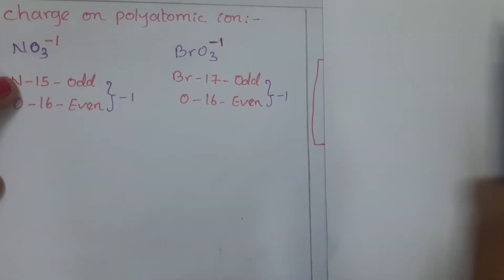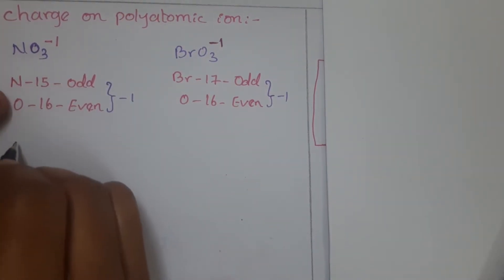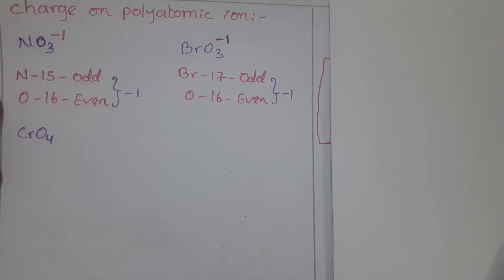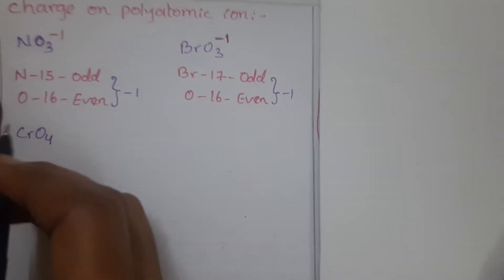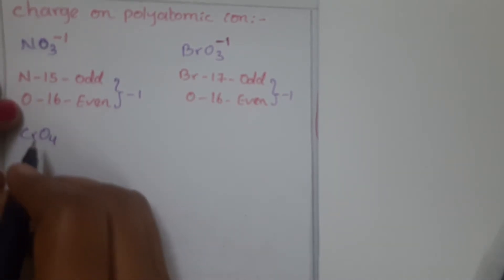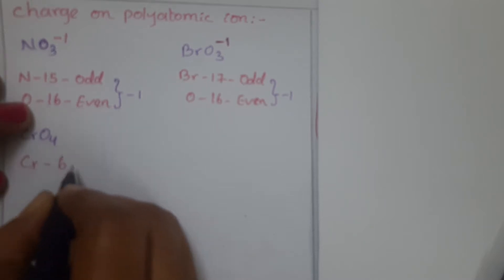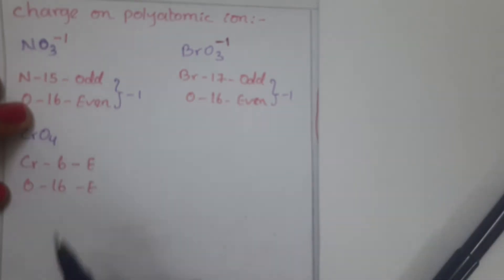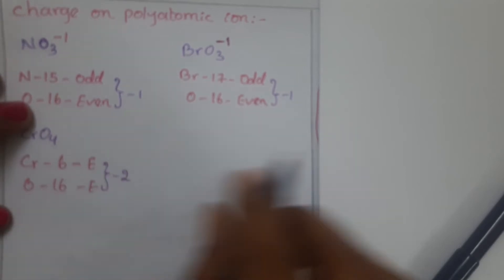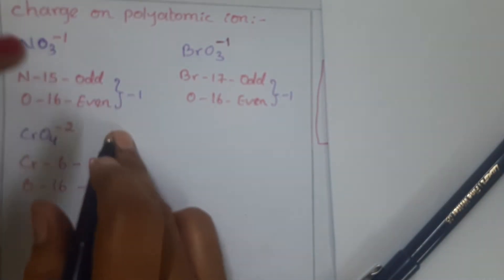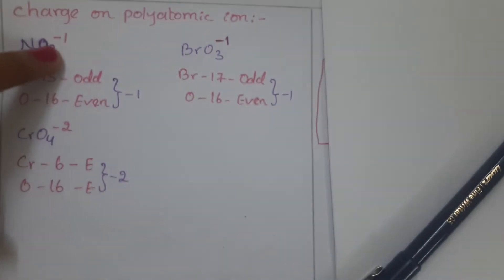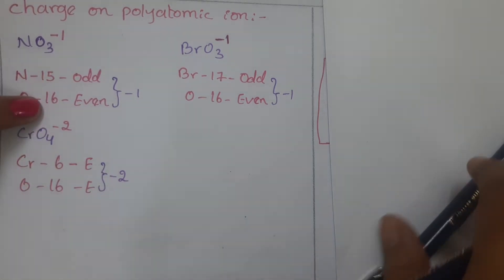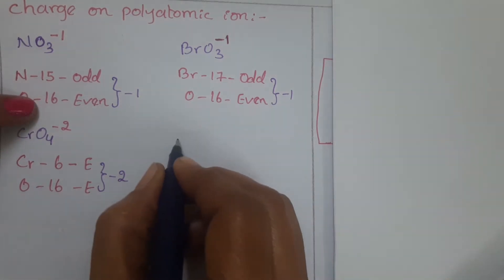Let us take one more example: CrO4. Chromium is a d-block element; its atomic number is 24 and it belongs to the sixth group of the modern periodic table — an even number. Oxygen is in the 16th group — also an even number. Even and even means we write minus 2. So CrO4 carries a minus 2 charge.